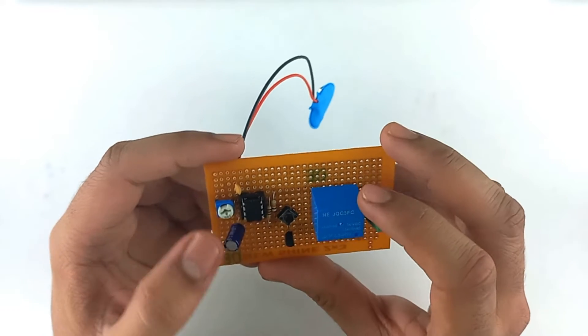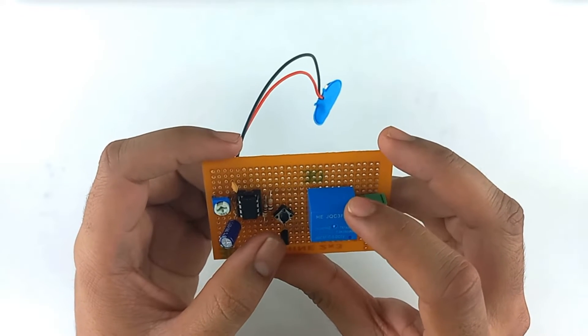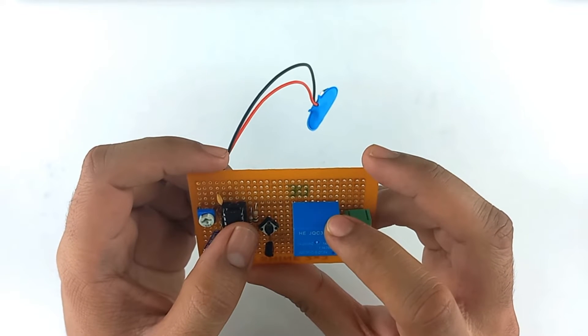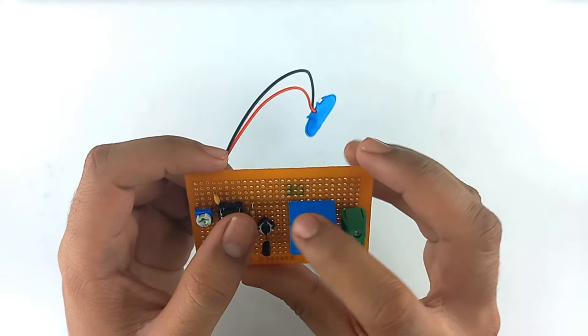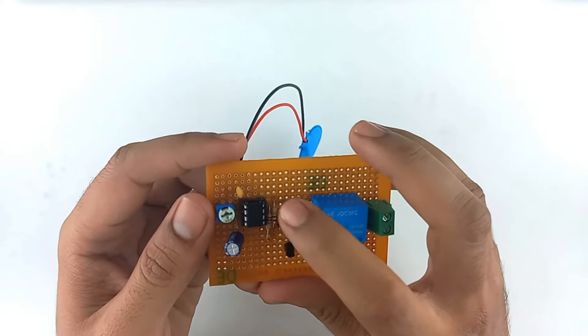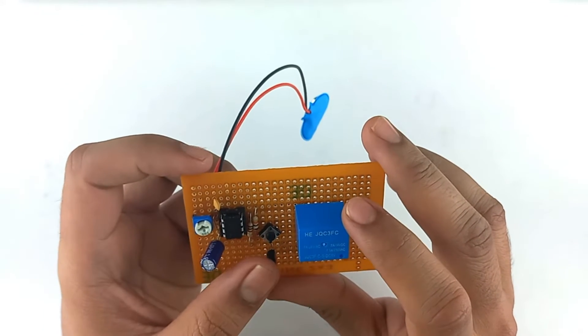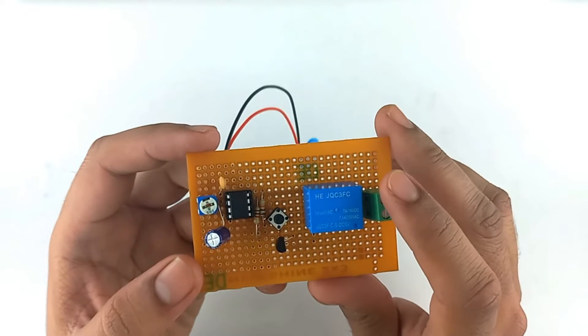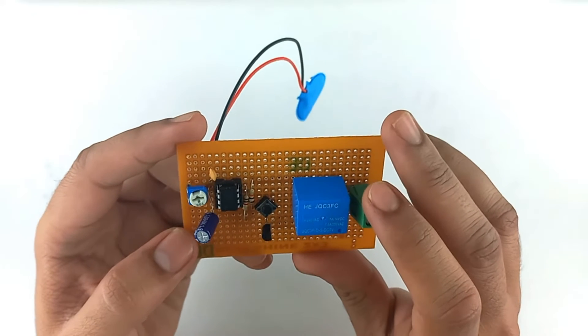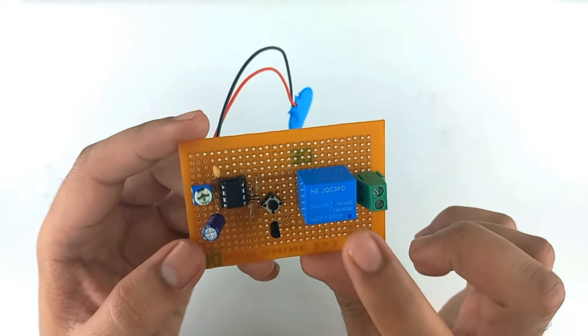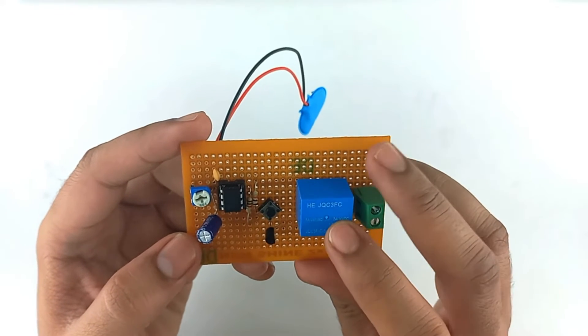Pin number 1 is connected to the emitter of NPN transistor. Pin number 2 is connected with pin number 4 with the help of 10K resistor. Pin number 3 is connected to the base of the transistor with the help of 1K resistor. Pin number 4 is connected to the relay.